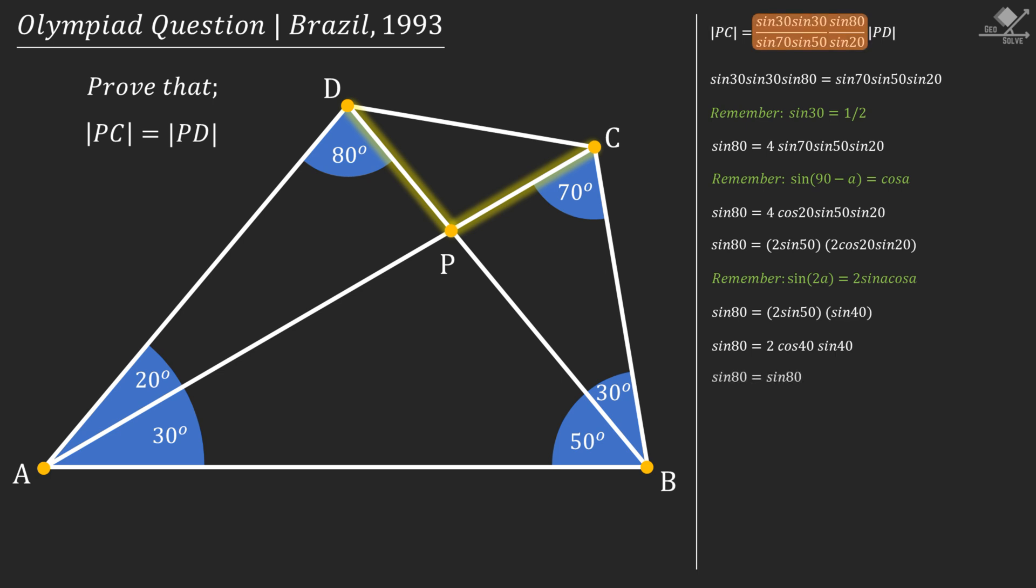And right side of the equation will also become sine 80. Therefore, this shaded expression is proven to be equal to 1, and that proves PC is equal to PD and that will be our answer.